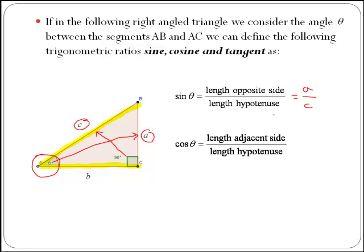Cosine of theta is the length of the adjacent side over the length of the hypotenuse. In this case, the adjacent side is B. Therefore, cos of theta is B over C.